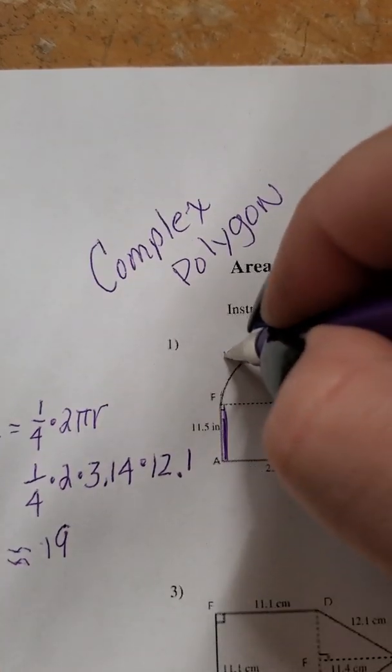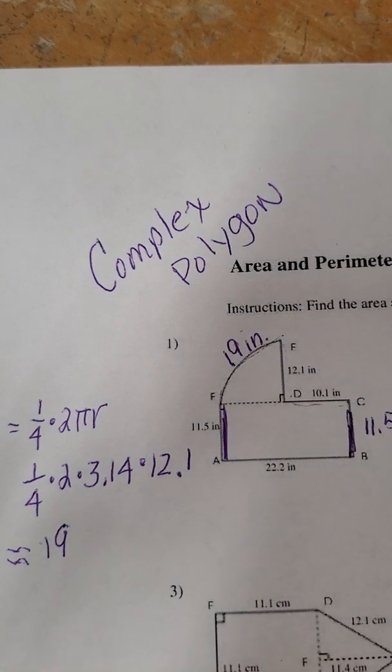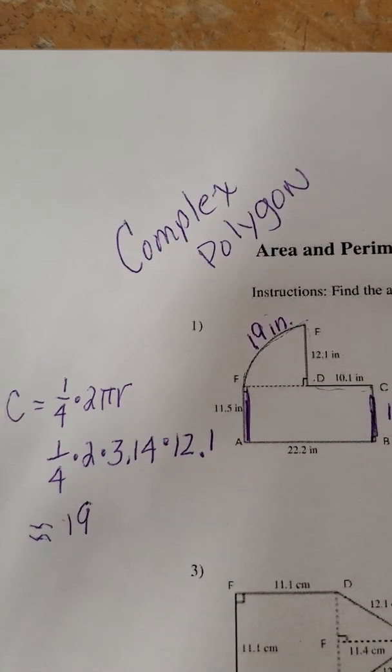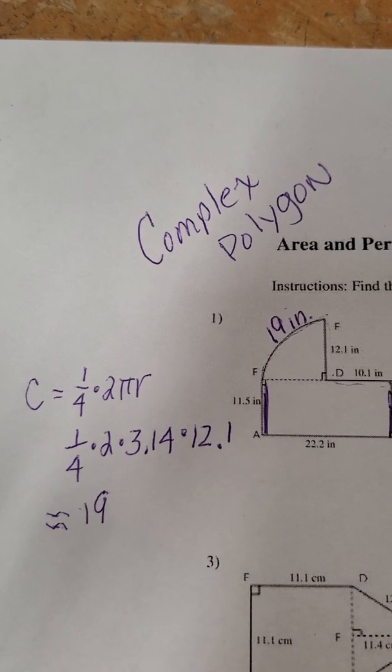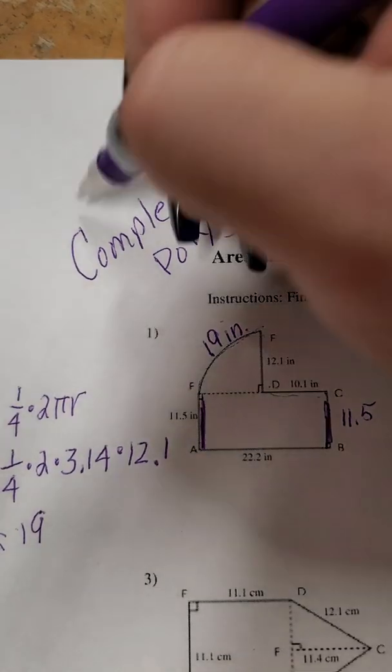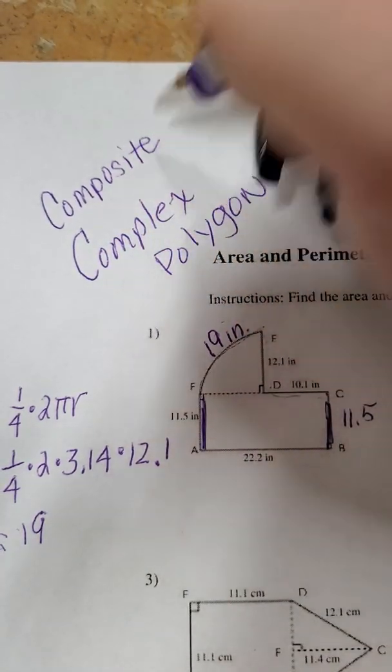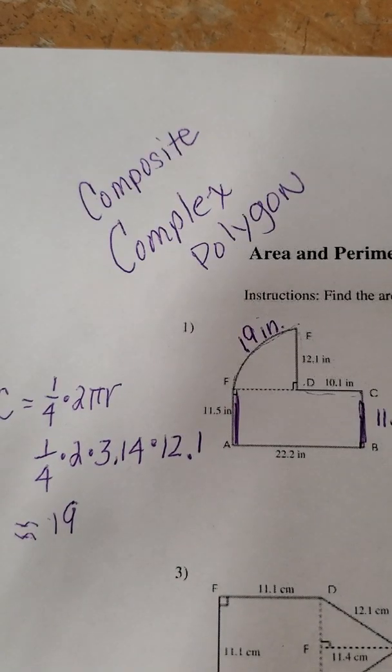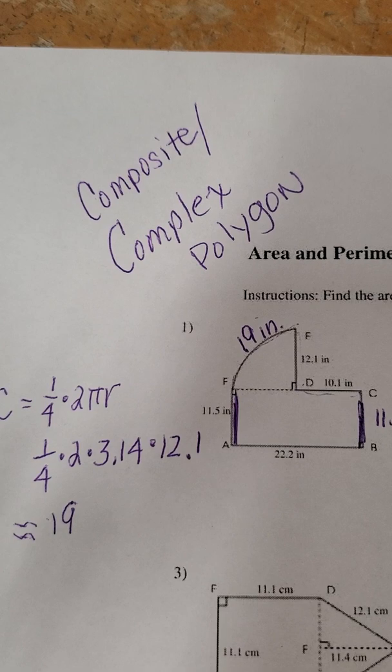So if I go back and label that this is 19 inches because it's a fourth of the circle right. That's why we used one-fourth back here, one-fourth of the circle. Now to find the perimeter of the complex shape or composite, sometimes they call them composite. Composite means that they're just made up of other things. So composite or complex polygon.